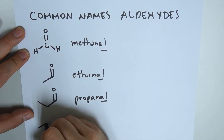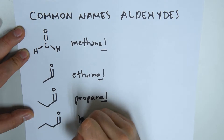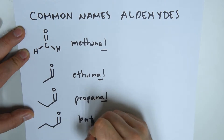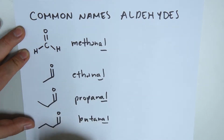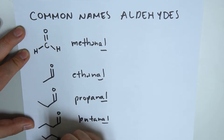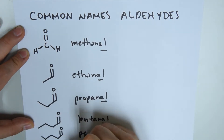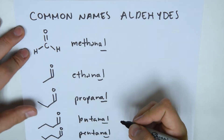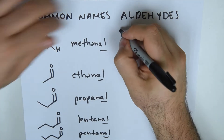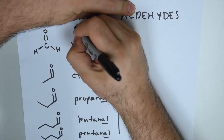And then we have butanal, and pentanal. These names are IUPAC — the systematic international names for these aldehydes.